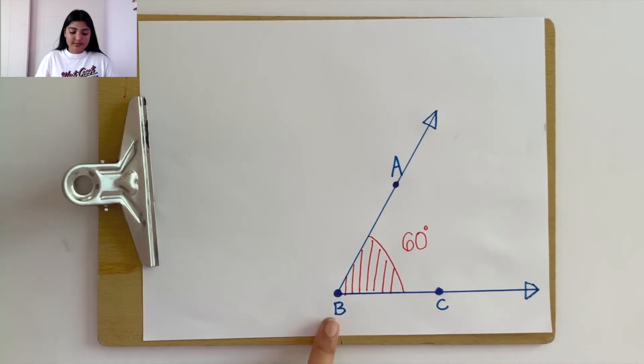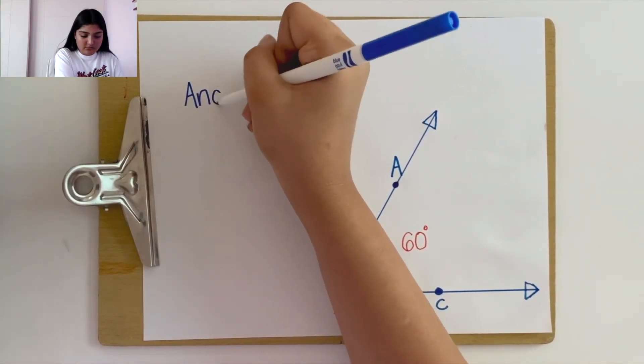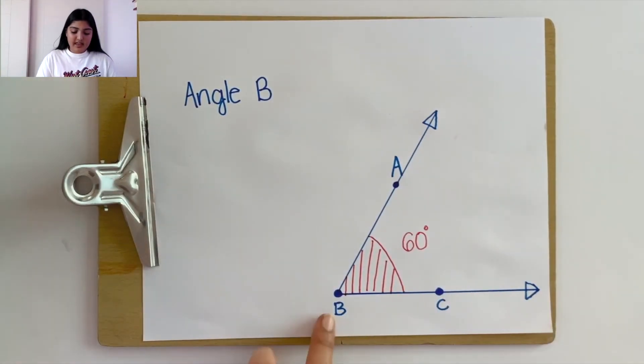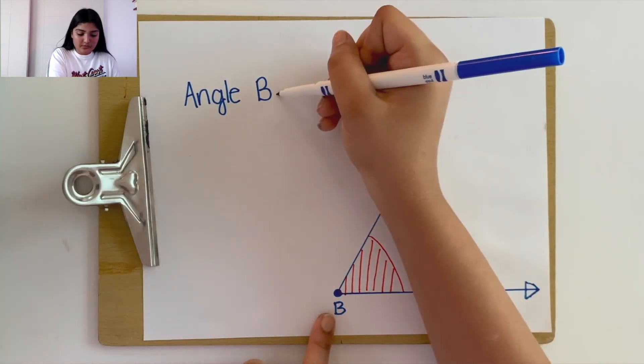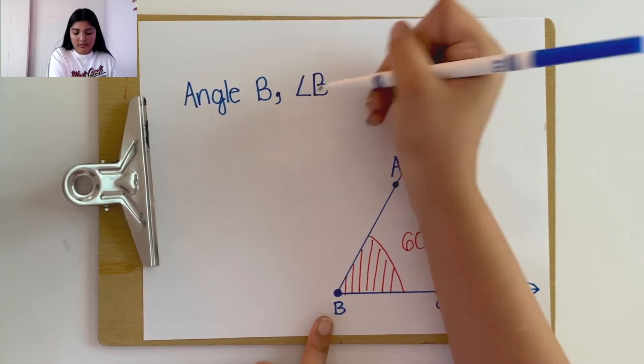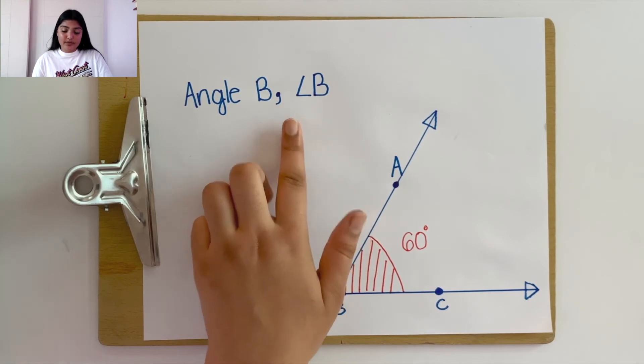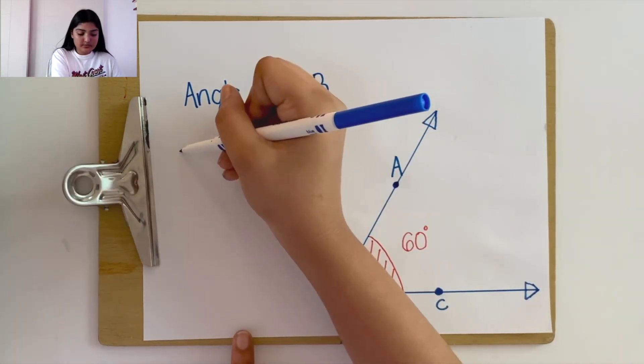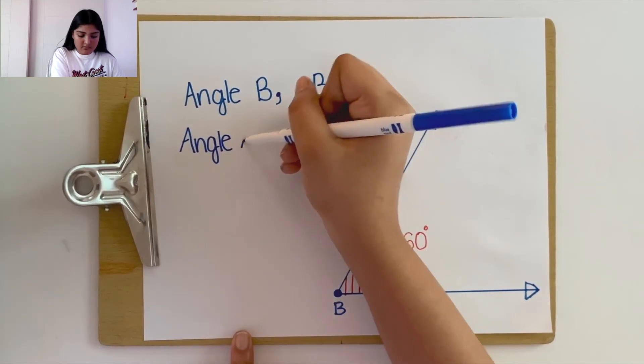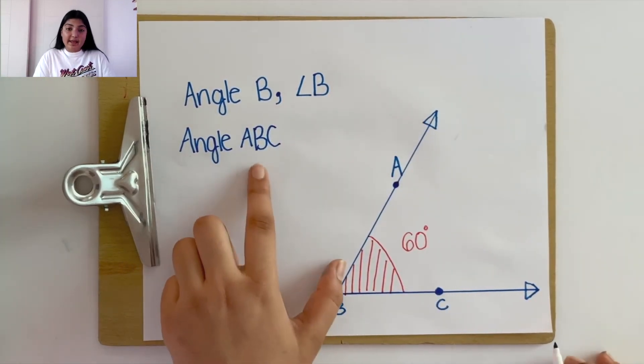We can write it as angle B, or by using this symbol, which means angle.